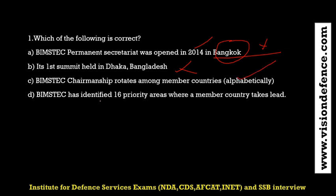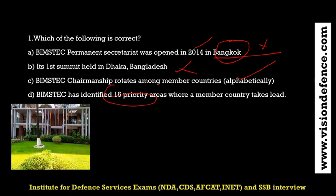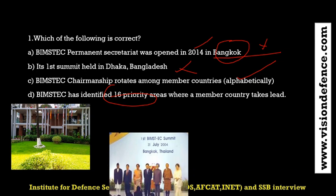BIMSTEC has identified priority areas where a member country takes the lead. Initially there were six areas, but the number was increased and now there are 14 priority areas in total.